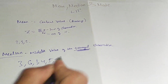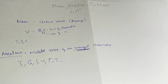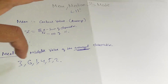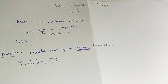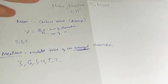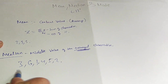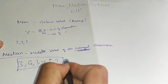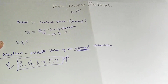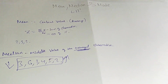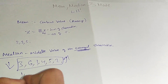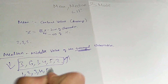For example, suppose the given observations are 3, 6, 1, 4, 5, and 2. Finding the middle value directly gives the wrong answer. The median definition says middle value of the arranged observation, so we must first arrange them. In ascending order: 1, 2, 3, 4, 5, 6. In descending order: 6, 5, 4, 3, 2, 1.